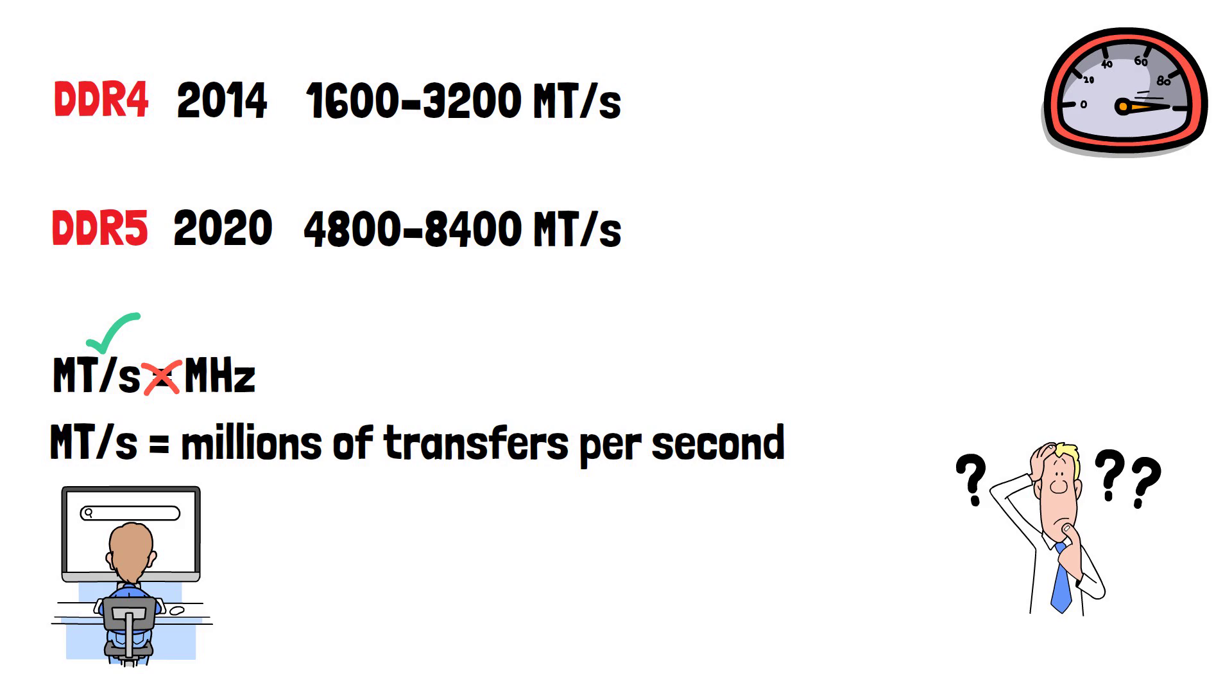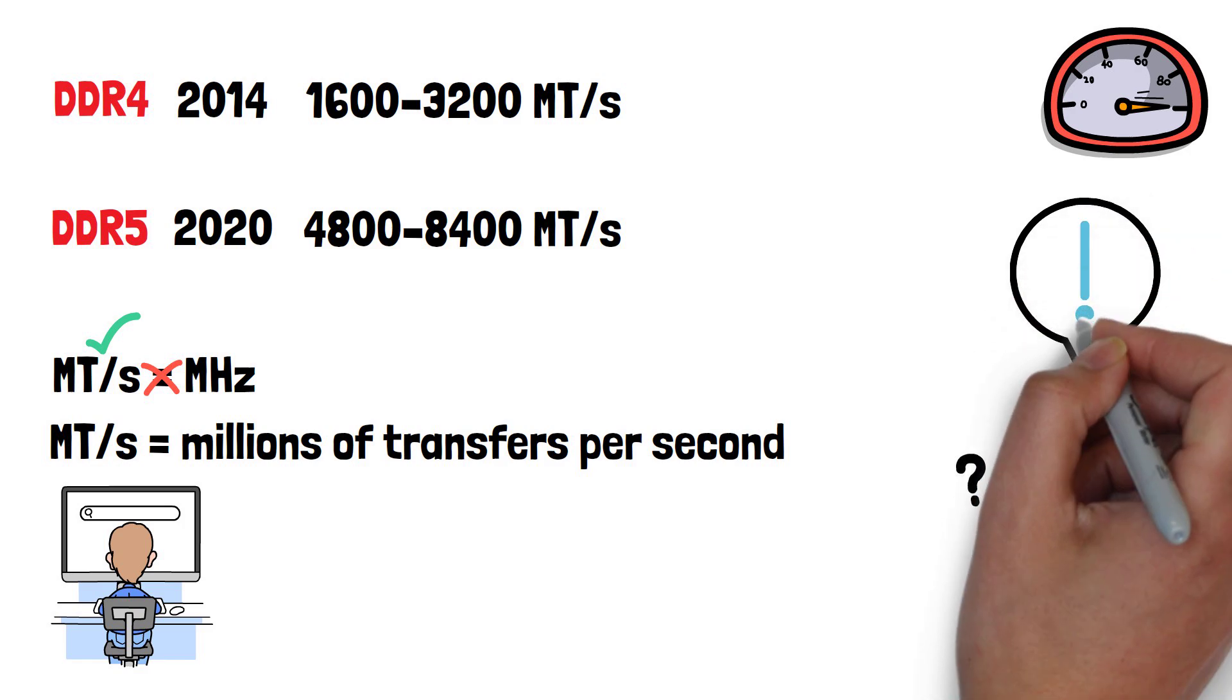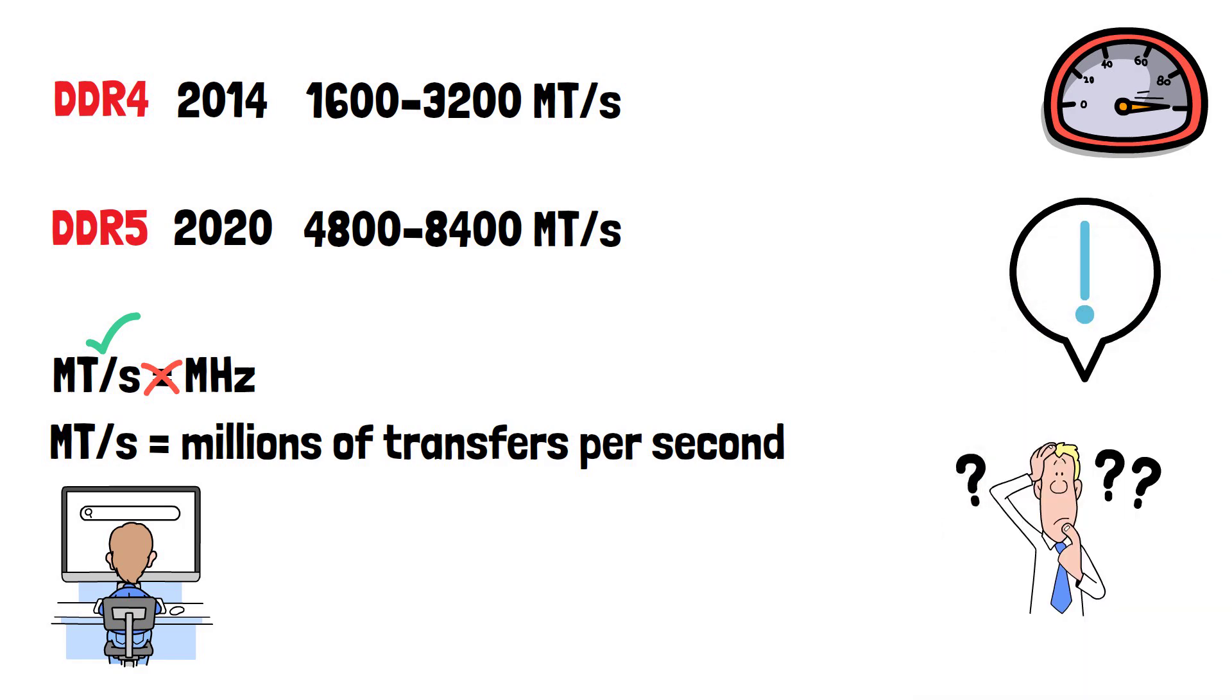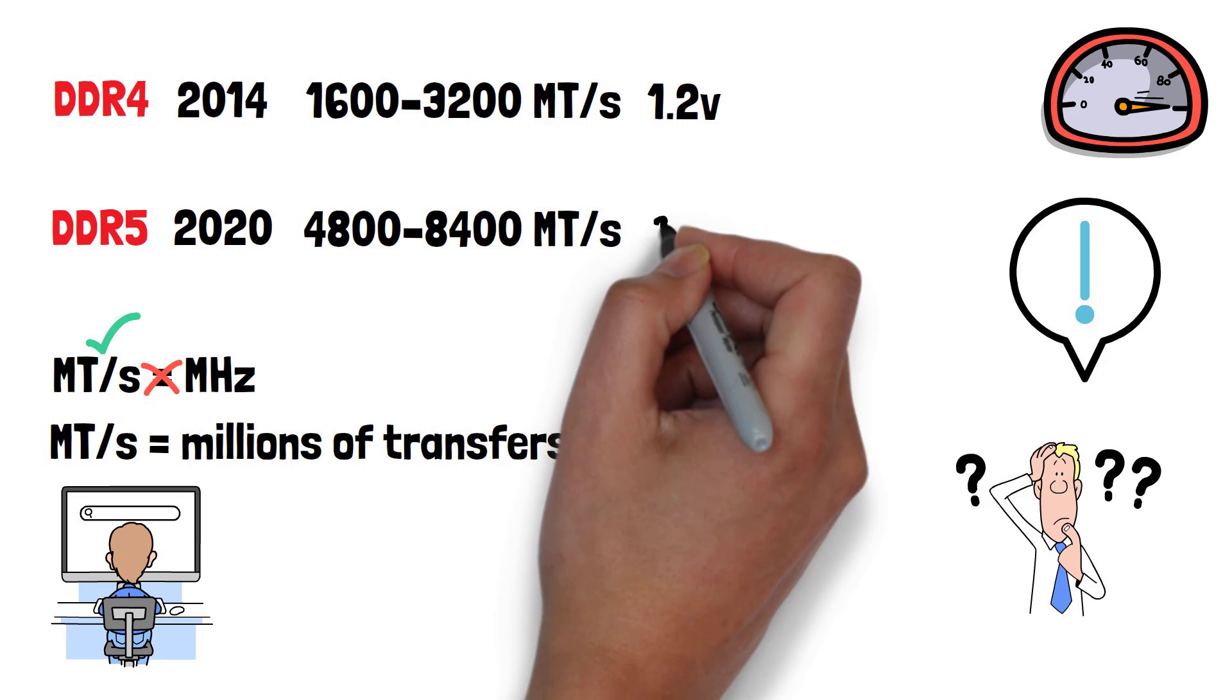These speeds can be improved further by overclocking, but you can void your warranty by doing this. Moving on to power usage, DDR4 RAM uses 1.2 volts, and DDR5 has a lower voltage of 1.1.